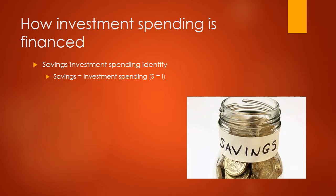How investment spending is financed is captured by the Savings-Investment Spending Identity, which simply states that savings equals investment spending — S equals I. Mathematically, the amount of savings in an economy equals its investment spending. When you save money in a bank or financial institution, the bank can lend that money out for investment spending. Savings under your mattress doesn't count because nobody can borrow it. Banks cannot lend out what has not been saved.